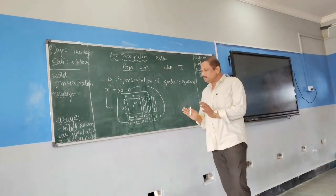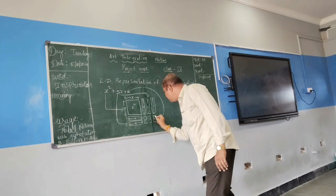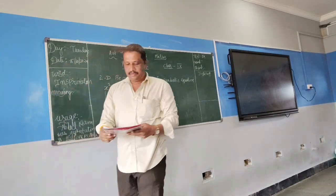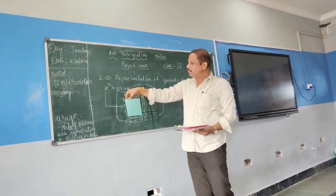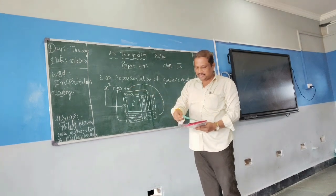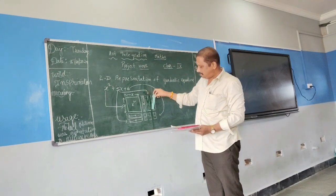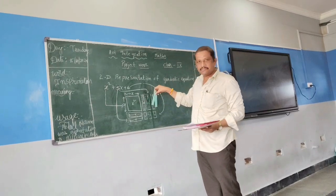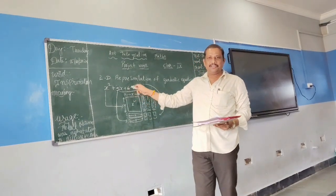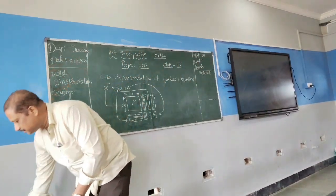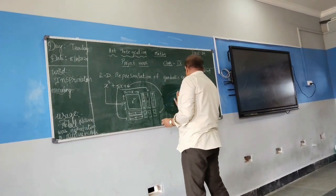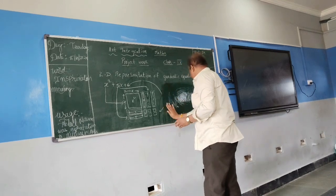So we are going to construct it by using a chart or math set. I took a square whose length and breadth are equal — x into x gives x squared. I consider six strips of this kind: two strips horizontally arranged, three strips vertically arranged. And the unit squares — I got six, because the constant is six. Now I am going to attach these things on the board.